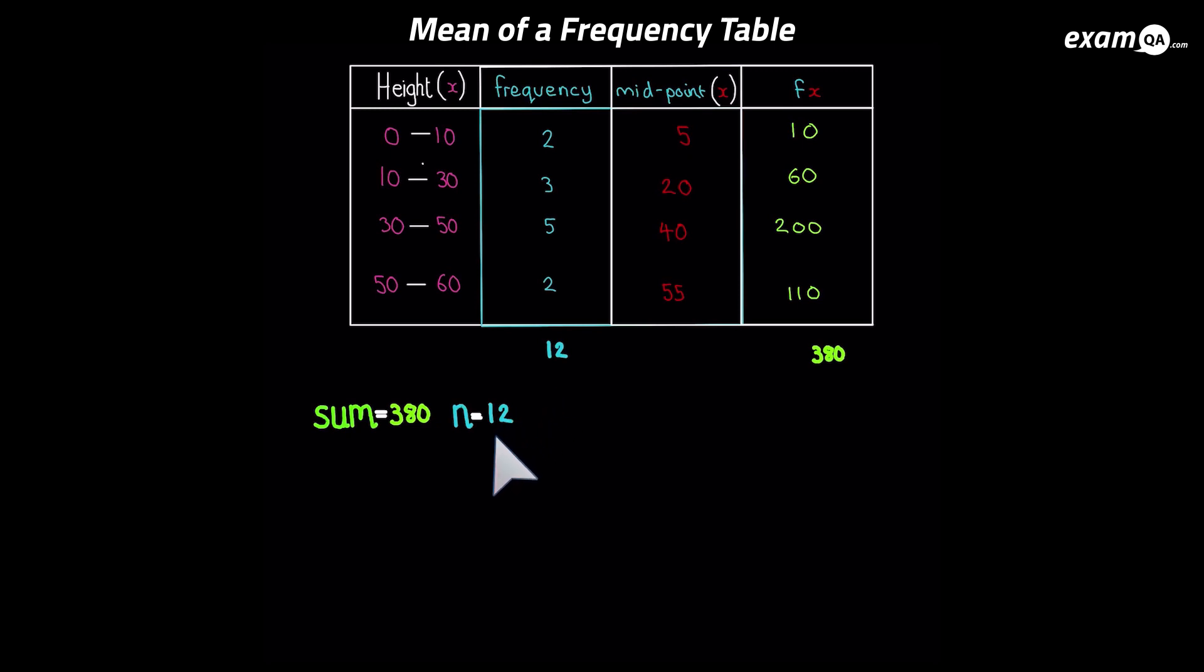Now we can go on to fill in the formula. The formula for the mean is remember sum divided by n. The sum is 380. And our n is 12. So it's 380 divided by 12. And that gives us 31.7 to one decimal place.